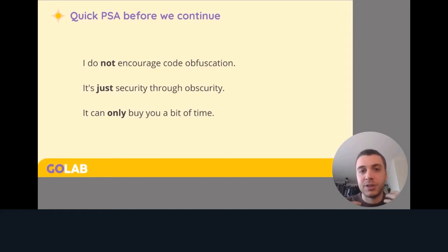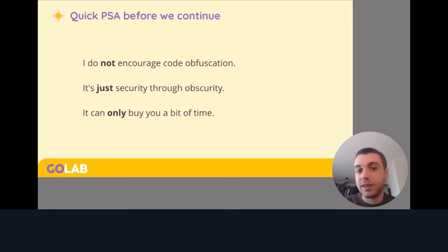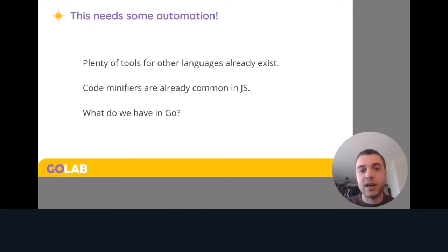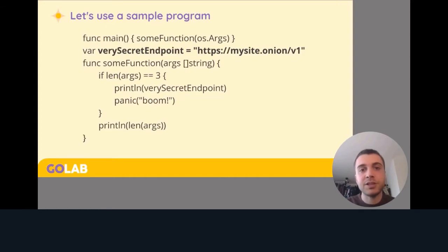A quick PSA before we continue: I certainly do not encourage the use of code obfuscation. It is just security through obscurity. It can only buy you a bit of time against somebody trying to figure out what your program does. But if they have enough resources, time, and patience, they can do it anyway because the program is there and it behaves the same way. So let's talk about automation. Plenty of tools like this exist for other languages — the most common area would be code minification, which is very common in JavaScript.